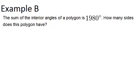Let's go to example B. The sum of the interior angles of a polygon is 1,980 degrees. How many sides does this polygon have?